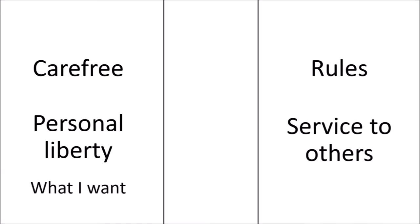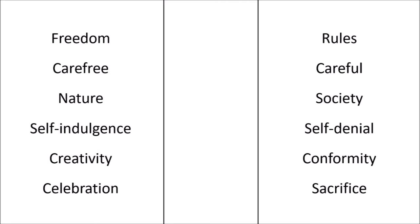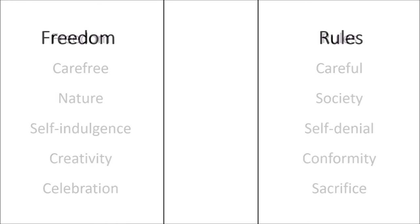So I propose a new diagram. On the left is the carefree life of personal liberty. On the right, the lifestyle bound by rules and service to others. On the left, we do whatever we want, regardless of other people's wants or needs. On the right, we do whatever other people want, regardless of what we want or need. There are lots of words to characterize these sides, but let's boil it down to freedom and rules, which can mean other people's rules for us, or even our own rules for ourselves, just rules in general.